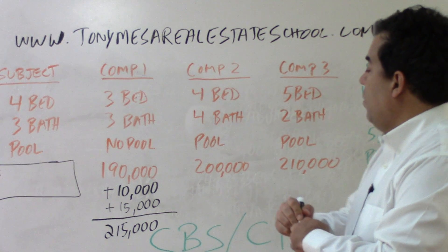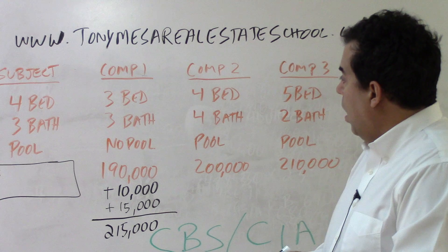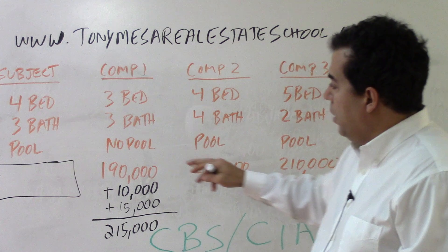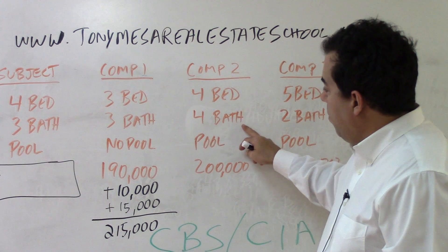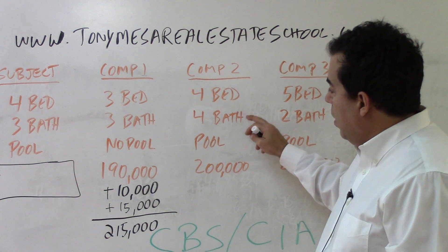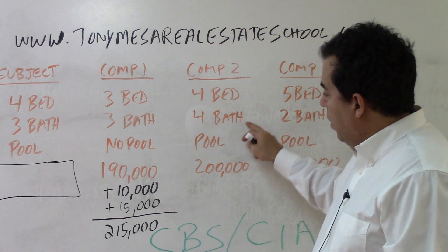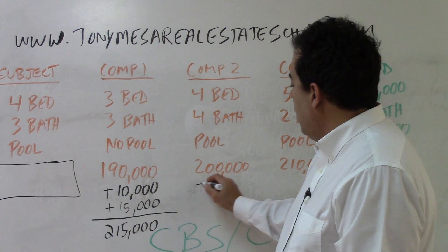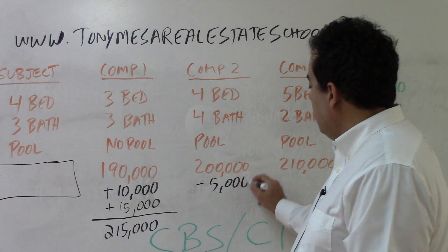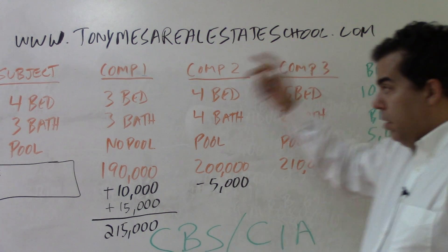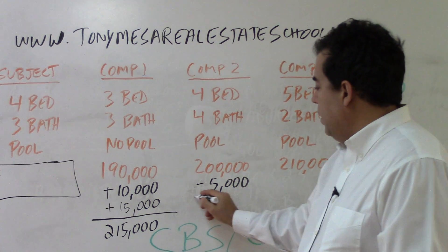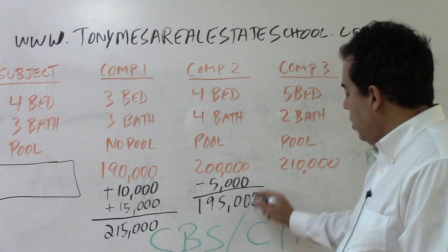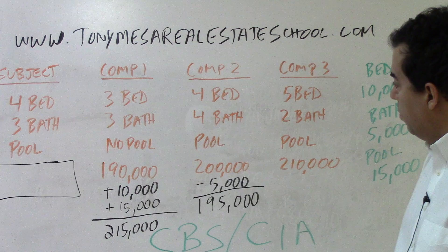For comparable number two: subject has four bedrooms, comp has four — same, no adjustment. Subject has three bathrooms, comp has four — the comp is better, CBS, so we subtract $5,000. Pool is the same — no adjustment. So $200,000 minus $5,000 gives us $195,000 as the adjusted sales price of comparable sale number two.